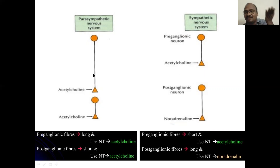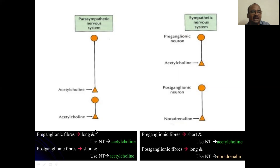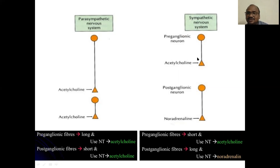This is called the preganglionic nerve. This is called the postganglionic nerve — after the ganglia, that's why postganglionic. Just like prepaid — before talking — and postpaid — after talking. Like that you can remember. The preganglionic nerve fiber is long here and this is very short. The preganglionic nerve fiber is long and it uses acetylcholine. That's why this is called the AA system — here also acetylcholine. Postganglionic nerve fiber is short. Whereas in sympathetic system, it is opposite — preganglionic nerve fiber is short. Ganglia means acetylcholine.